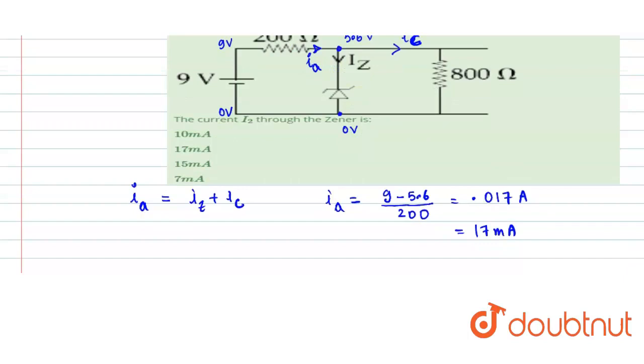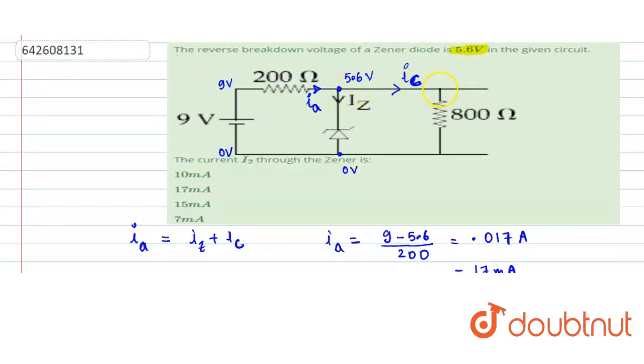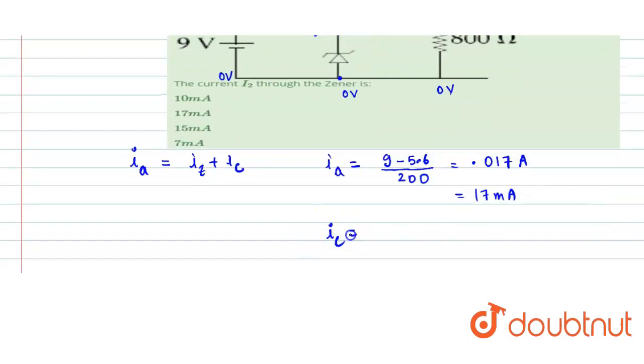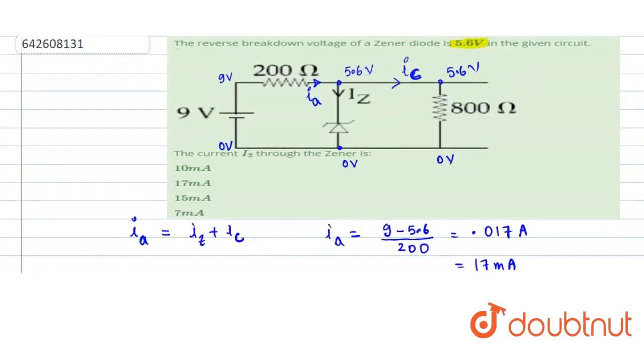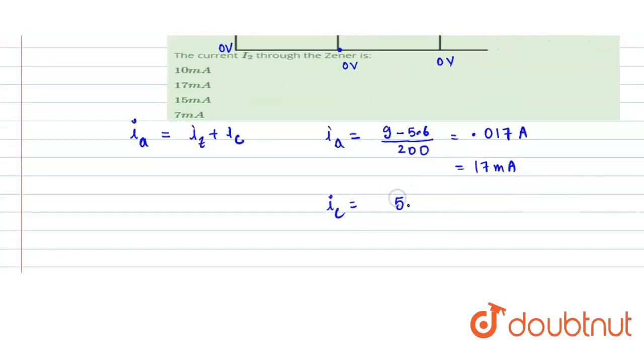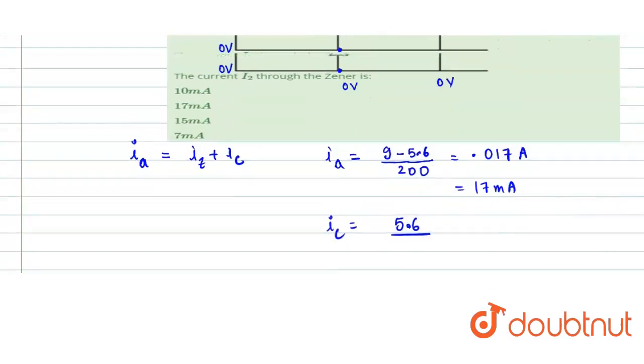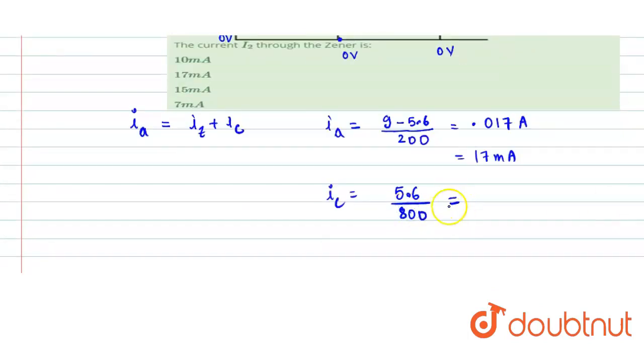Similarly, we can find IC. For finding IC, if this is at 5.6 V, this will also be at 5.6 volt and this will be at 0 volt. Current IC will be V upon R, so the potential difference is 5.6 divided by 800 ohm, and that is 0.007 ampere or 7 milliampere.